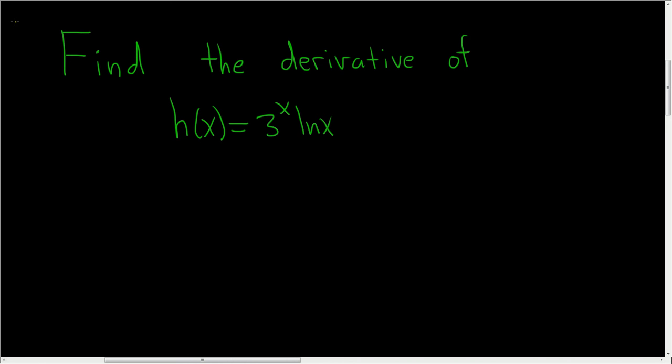In this problem we have to find a derivative and we will use the product rule. Recall the product rule says that if you have f times g and you take the derivative, I think of f as the first factor and g as the second factor.